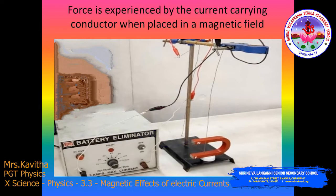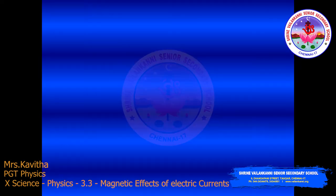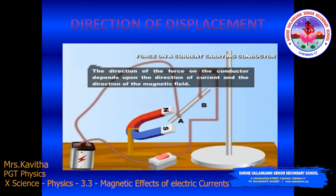The force experienced by the current-carrying conductor when placed in a uniform magnetic field — the direction of force acting on the rod can be changed by reversing the direction of the magnetic field. The direction of displacement of the conductor depends on the direction of the current flowing through the conductor and the direction of the magnetic field. Whenever a current-carrying conductor is placed in a magnetic field, it experiences a force due to the magnetic field.